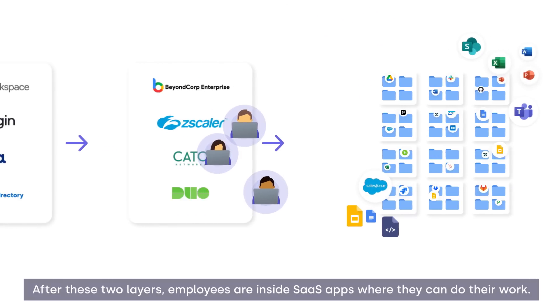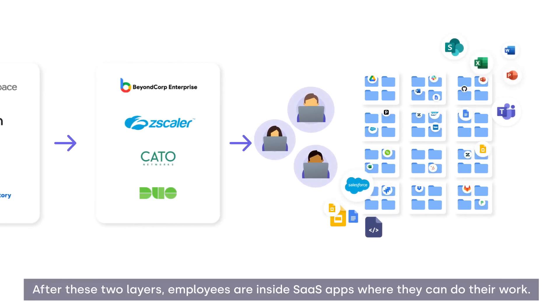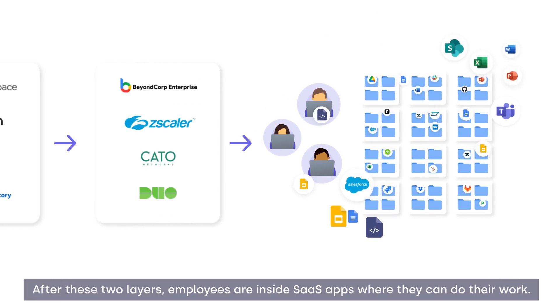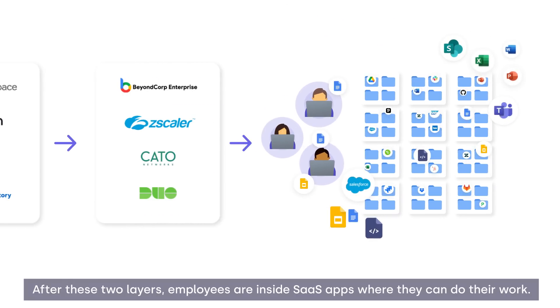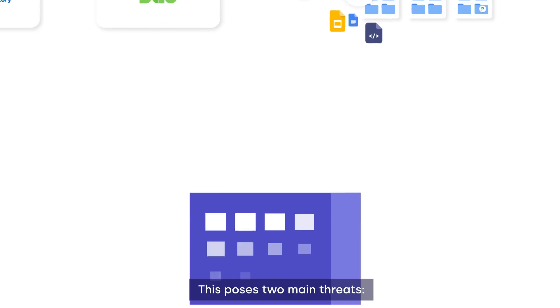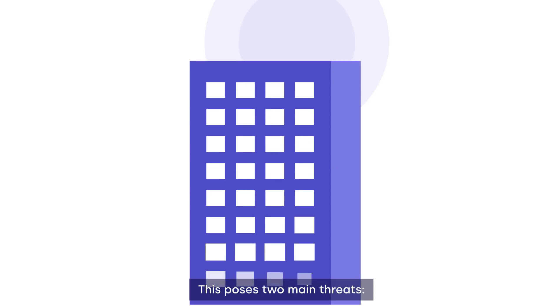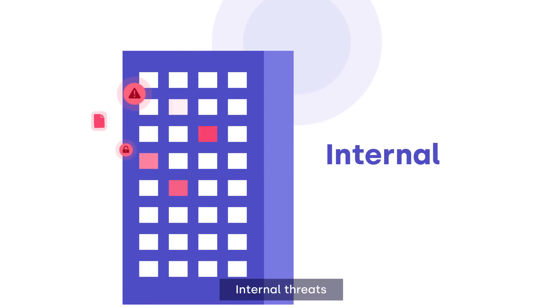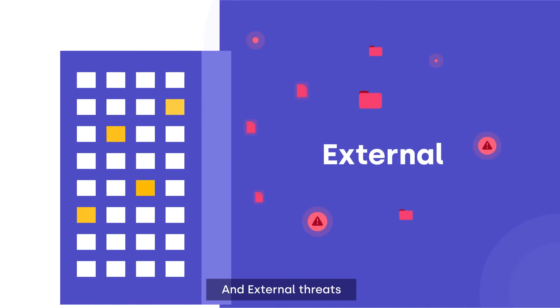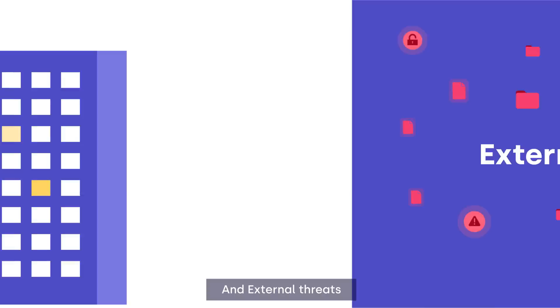After these two layers, employees are inside SaaS apps where they can do their work. This poses two main threats: internal threats and external threats.